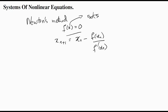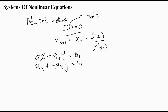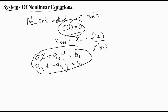After Newton's method, we looked at systems of equations, meaning simultaneous equations — two or more equations forming a system. In this particular topic we're looking at systems of nonlinear equations, so instead of one function we're going to have f1(x) equals zero, f2(x) equals zero, and so on up to fn(x) equals zero.